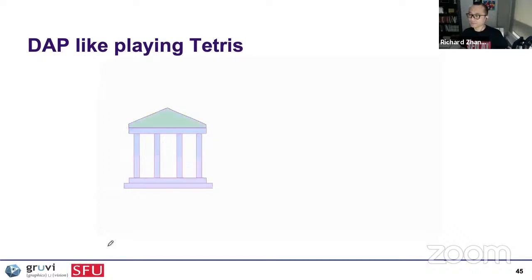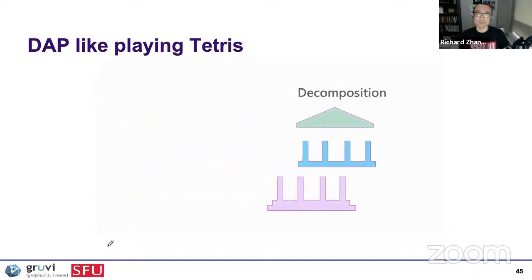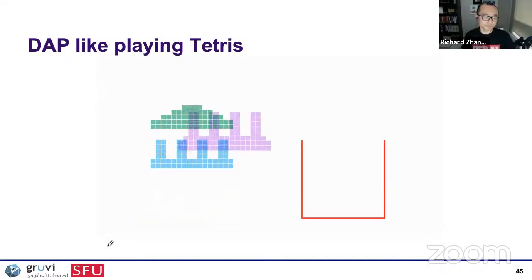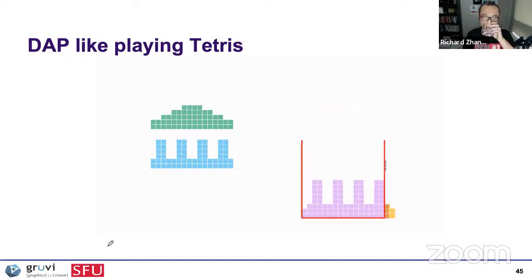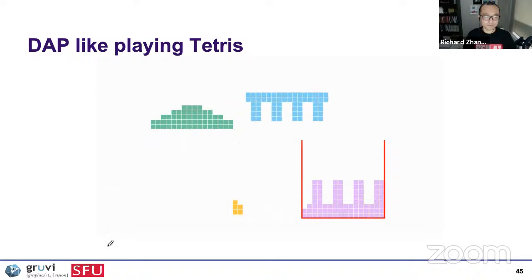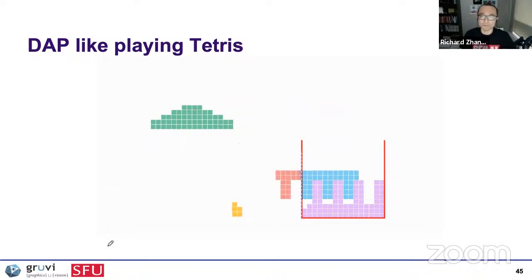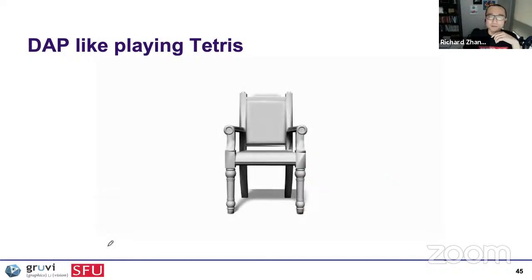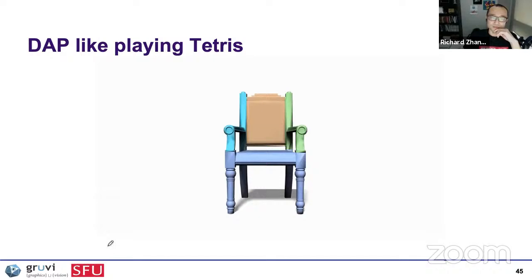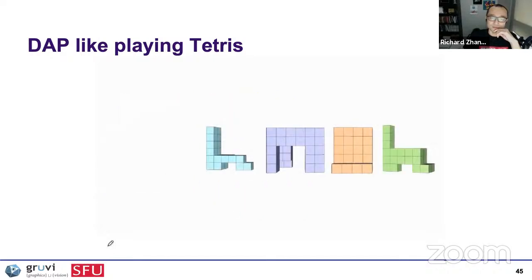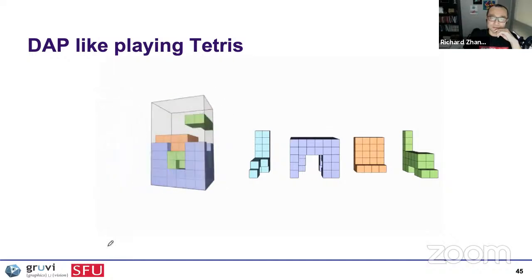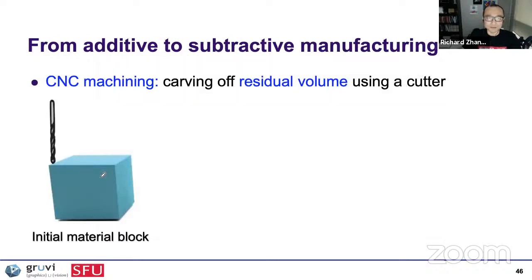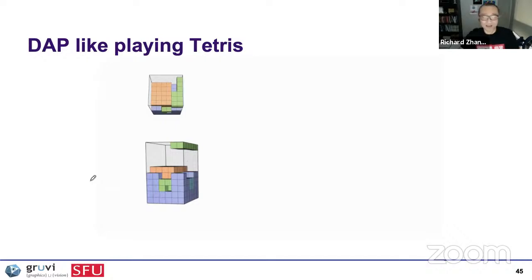DAPPER starts by decomposing the shape into pyramidal parts — here, just three. Then the parts are voxelized and packed into the container. The sequence shown leads to the best solution in one branch of a beam search. Some pieces are cut on the fly, yet all pieces remain pyramidal, which facilitates their docking. We started with three pieces and the final solution consists of five pieces. For a 3D model — a chair — the parts are voxelized and packed in the container while introducing axial cuts, showing just the winner sequence in the beam search.